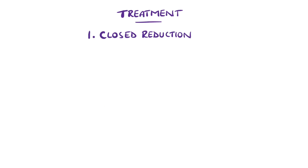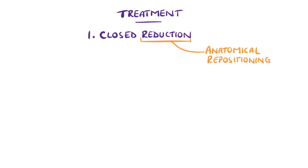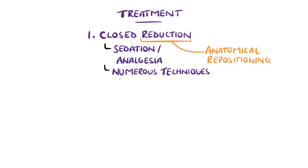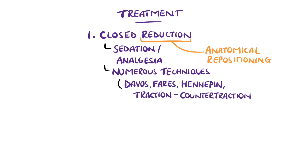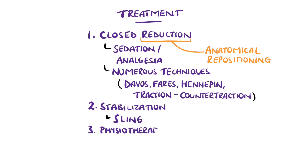To treat a dislocated shoulder, it needs to be reduced — meaning repositioning of the humerus to its normal anatomy. This is known as a closed reduction because the skin is not opened to reposition the anatomy. It's normally done with some sedation and analgesia, and there are multiple techniques used. Afterwards, there is normally a period of stabilisation in a sling, followed by gradual physiotherapy. In recurrent cases, surgery may be needed to stabilise the joint.